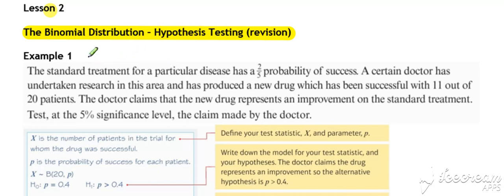Standard treatment for a particular disease has a two-fifths probability of success. A certain doctor has undertaken research in this area and has used a new drug, which has been successful with 11 out of 20 patients. The doctor claims that the new drug represents an improvement on the standard treatment. Test the claim at the 5% significance level.